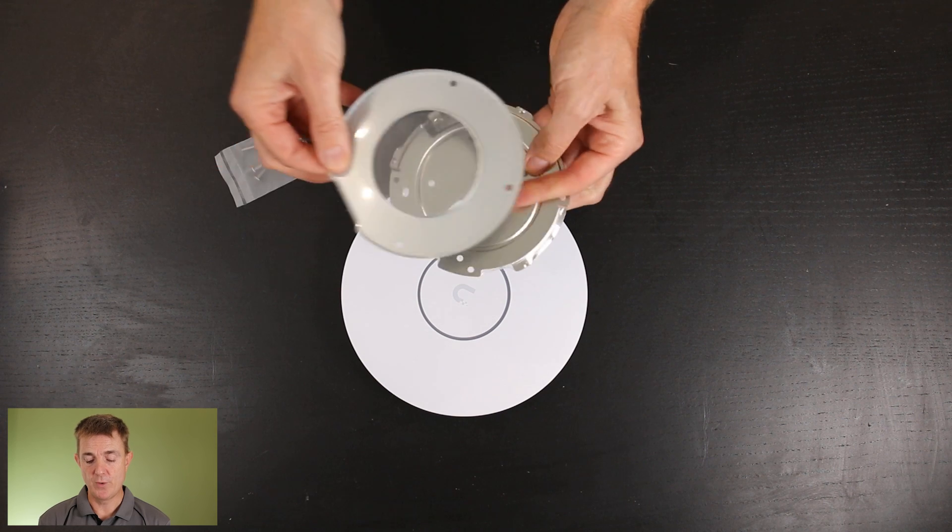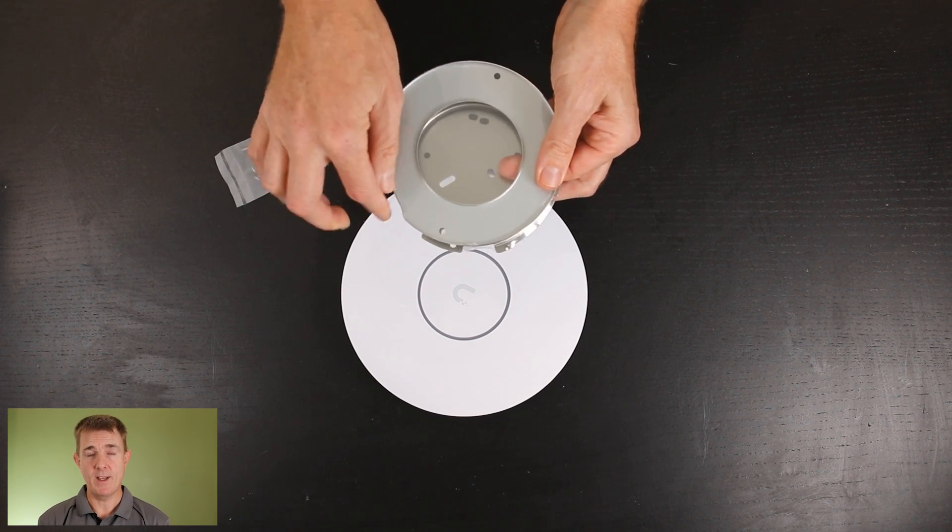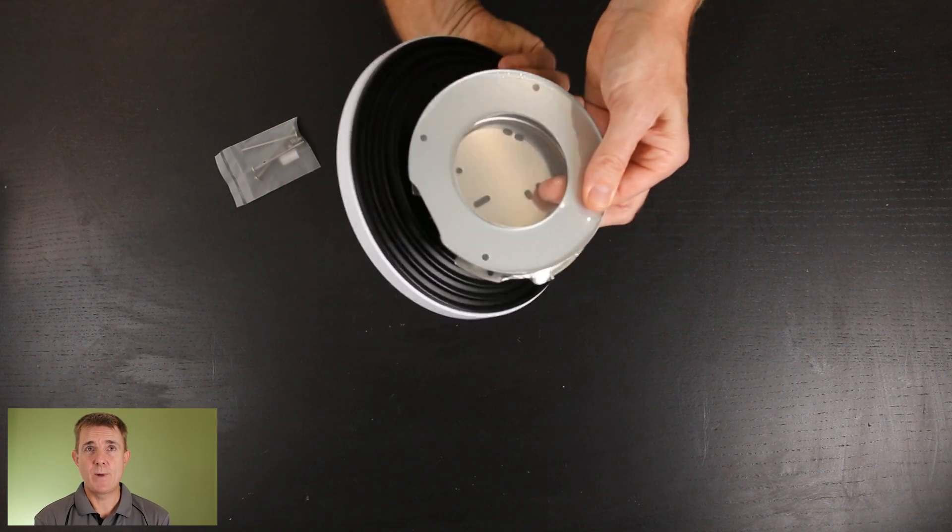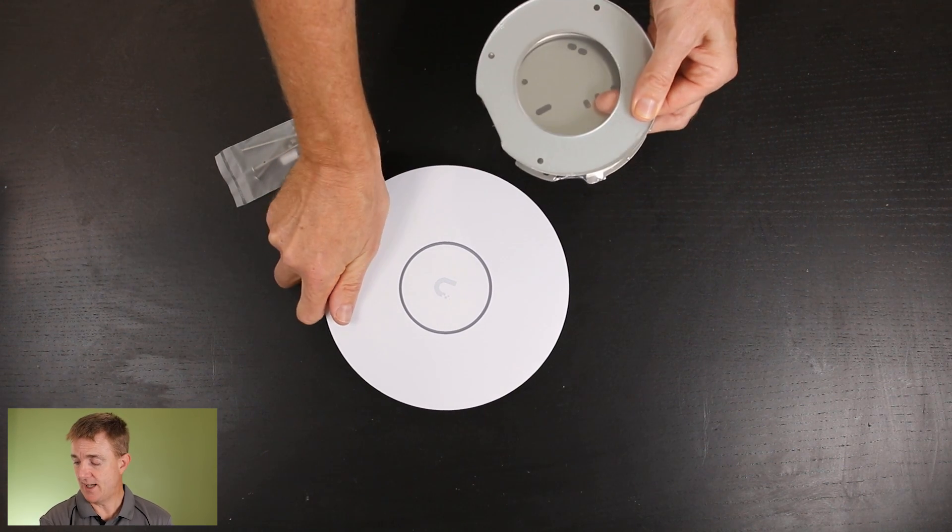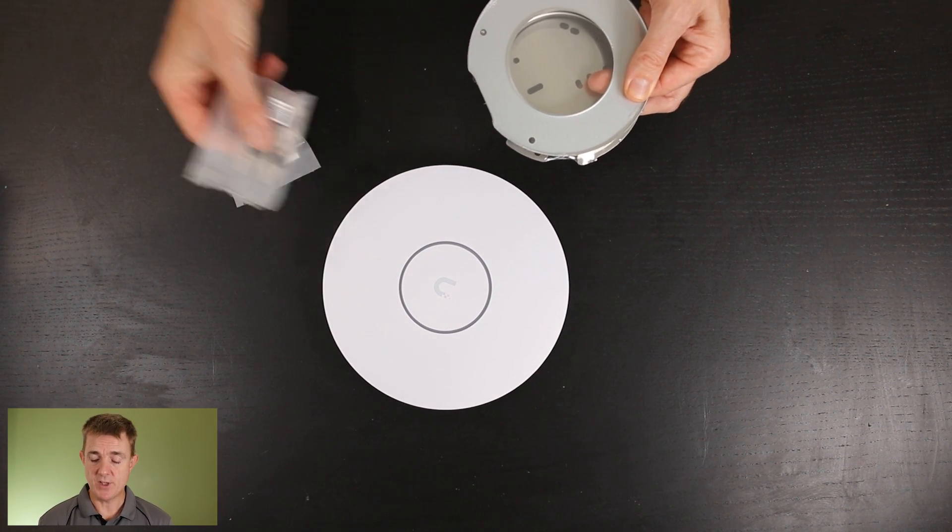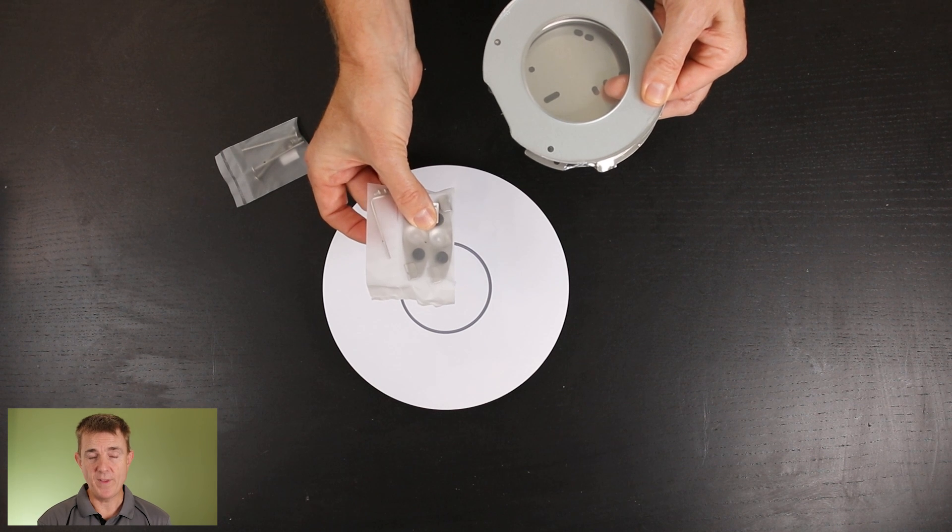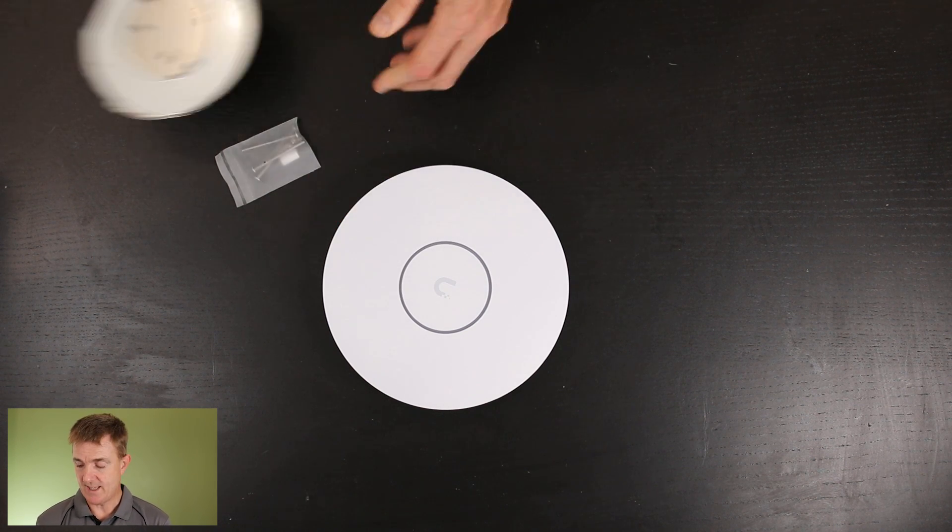Your ethernet cable would come through this spot at the end here. And then obviously, we could then screw this into place and this would be on a suspended ceiling. Or if you want to mount it actually on the track itself, then you can use these to fix it in place.